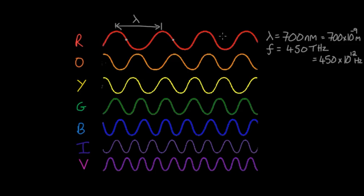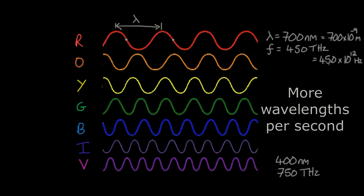As the wavelength decreases, we get different colors. Violet, for comparison, has a wavelength of 400 nanometers, much smaller than red, and a frequency of 750 terahertz, so it oscillates much faster than red.